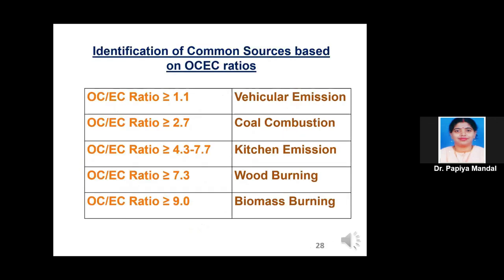Common emission sources have been identified based on the OC/EC ratio. If the OC/EC ratio is greater than or equal to 1.1, there are chances of vehicular emissions. If the ratio is greater than or equal to 2.7, there are chances of coal combustion emissions. If the OC/EC ratio is in the range of 4.3 to 7.7, the source is likely kitchen activities. If the ratio is greater than or equal to 7.7, the source is likely wood burning. If the ratio is greater than or equal to 9, the source is likely biomass burning. Biomass burning has the maximum OC/EC ratio, while vehicular emissions have the lowest.